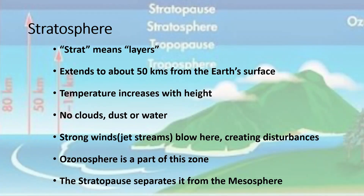The next layer is the stratosphere. Strat means layers. Here, strong winds called jet streams blow and create disturbances in waves. This layer extends to about 50 kilometers from the earth's surface and is much warmer. It does not have clouds, dust, or water. In this layer, we also have the ozonosphere, which we will deal with in a later slide. The stratosphere is separated from the mesosphere by the stratopause.